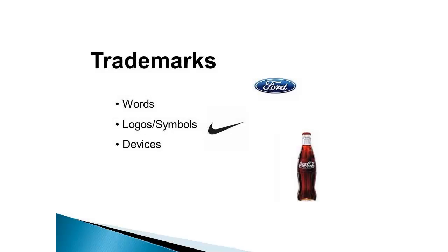The next kind of intellectual property is a trademark. Trademarks are so called because they're designed to help you market or identify a particular product. A trademark can be a word, a logo, a symbol, or a device that identifies a company's product. Some trademarked words include Popsicle, Q-tip, Jello, Velcro, Toyota Camry, Microsoft Windows, and Apple Macintosh — all trademarked by their respective companies.